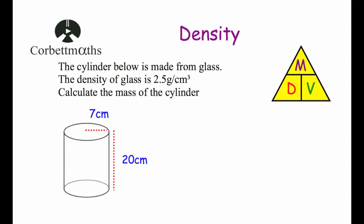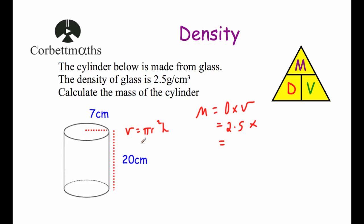Our last example: the cylinder shown is made from glass. The density of glass is 2.5 grams per centimeter cubed. Work out the mass of the cylinder. Mass equals density times volume. We know the density is 2.5, so we just need to find the volume of the cylinder first. The volume of a cylinder equals the area of the circle times the height — the formula is V = πr²h. So we do π times 7 squared times the height of 20.